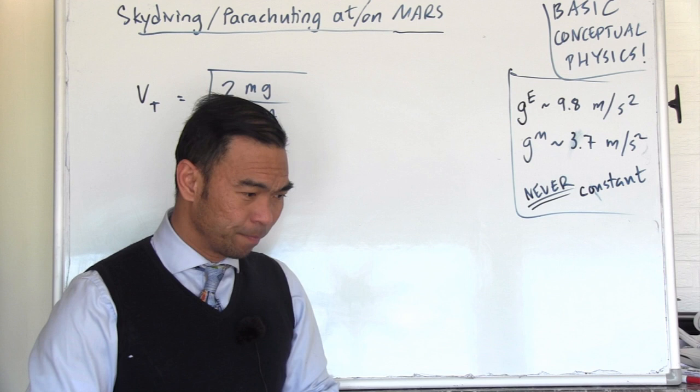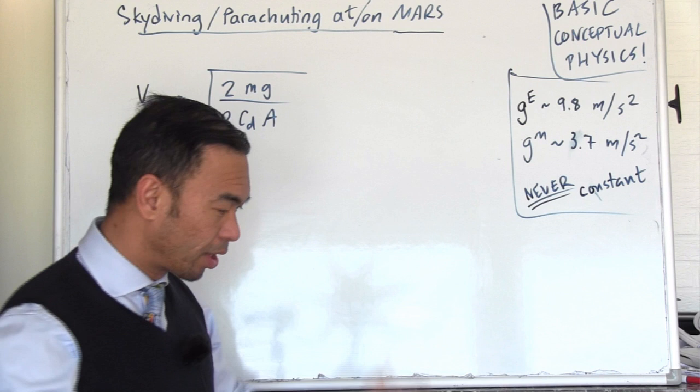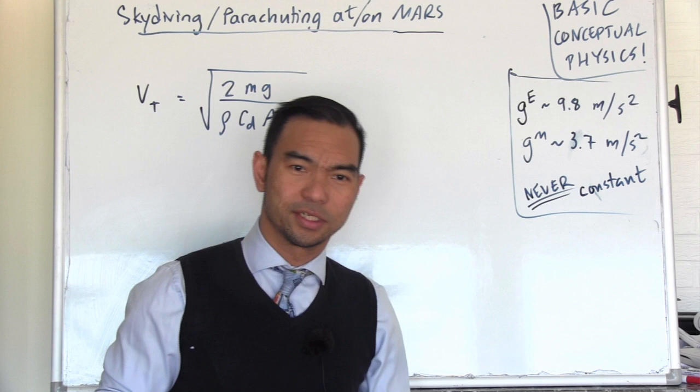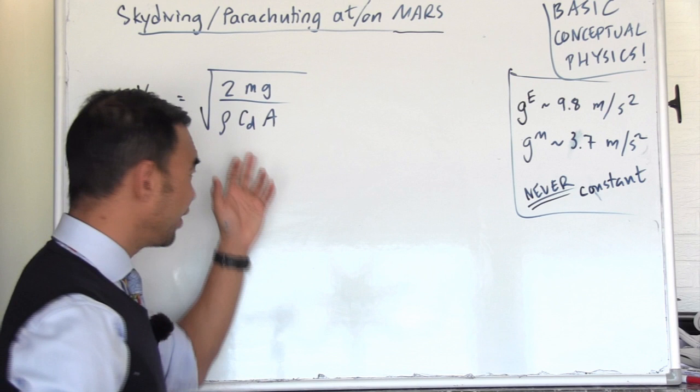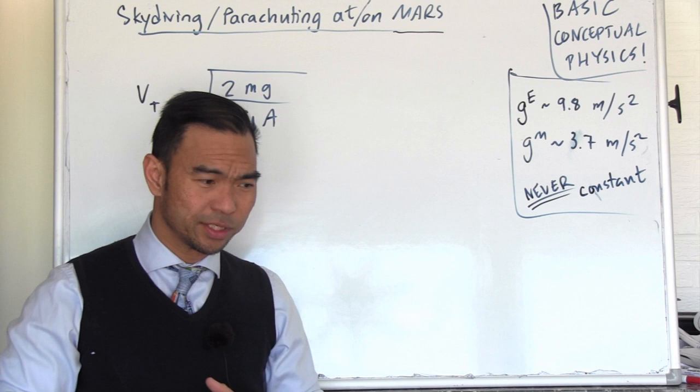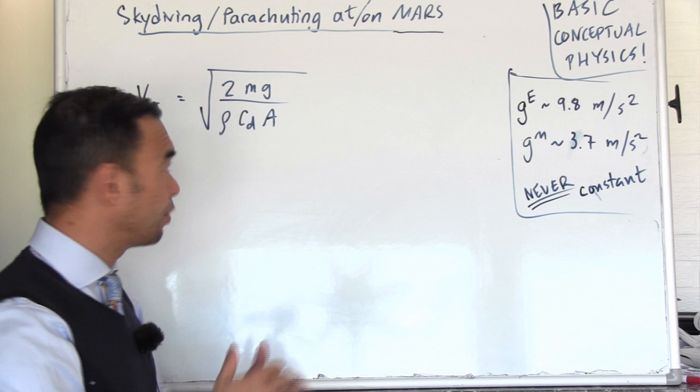We can say it's 9.8 roughly in Sweden. Rho is the air density, which is also not a constant. It's very sensitive to temperature. When it's cold you have denser air, and it's actually more lift generated because of this. CD is the drag coefficient.